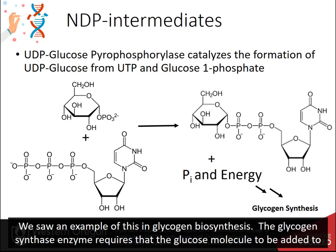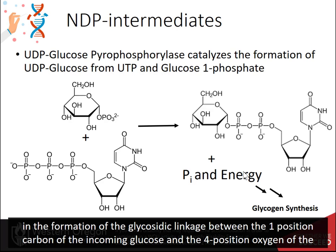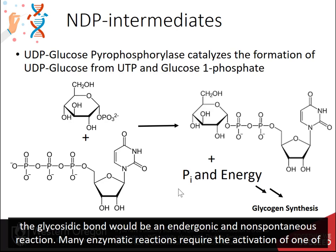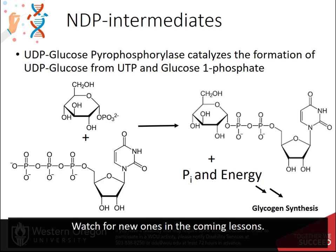We saw an example of this in glycogen biosynthesis. The glycogen synthase enzyme requires that the glucose molecule to be added to the nascent glycogen chain must first be activated to the UDP-glucose form. The UDP serves as a good leaving group in the formation of the glycosidic linkage between the one-position carbon of the incoming glucose and the four-position oxygen of the glycogen chain. Otherwise, if the anomeric hydroxyl group of glucose needed to be hydrolyzed in an unmodified form, the formation of the glycosidic bond would be endergonic and non-spontaneous. Many enzymatic reactions require the activation of one of the substrates by making an NTP derivative. Can you think of other reactions that use this mechanism? Watch for new ones in the coming lessons.